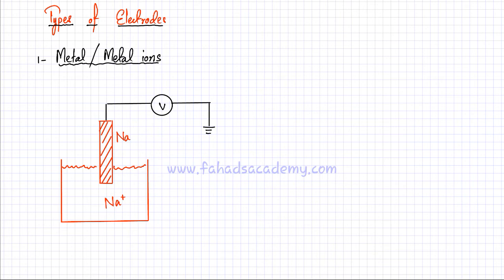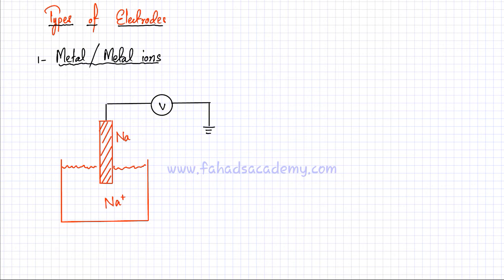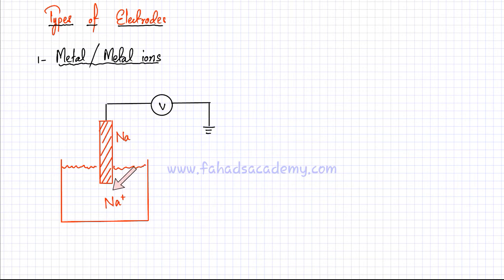We're going to look at all types of electrodes. The first specific type of electrode is between a metal in solid state and its metal ions in aqueous solution. Taking the example of sodium, you have a sodium electrode — a metal made out of sodium — which is dipped into a solution containing sodium ions. That solution could be NaCl or any sodium-related compound that is soluble and can provide sodium ions.